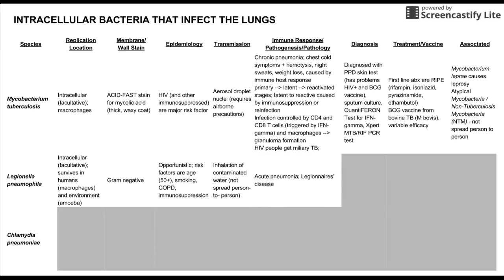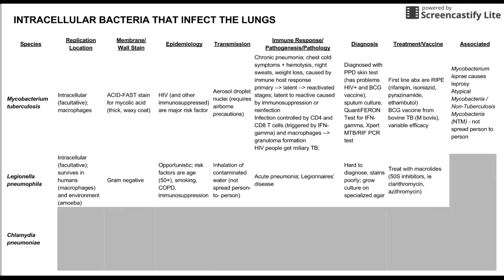Legionella, unlike TB, causes an acute pneumonia — a quick-onset pneumonia. It was first described in a group of older gentlemen together indoors, and thus named Legionnaires' disease. Legionella is particularly hard to diagnose: it does not stain well and requires a specialized agar to grow in the lab. It is treated with macrolides, which are 50S ribosomal subunit inhibitors — two examples are clarithromycin and azithromycin. The same bacterium, Legionella pneumophilia, also causes Pontiac fever, which has more flu-like symptoms and affects the upper rather than lower respiratory system.